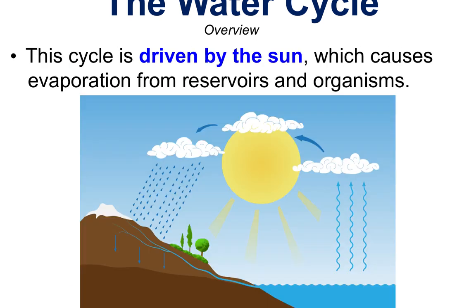What drives the water cycle on our planet is the sun. The sun causes evaporation. When we have reservoirs or places with lots of open water, and the sun comes out and the planet heats up, those water molecules increase in energy. They vibrate and eventually move out of their liquid state into a gas state, and that starts the process of condensation and then precipitation, beginning the water cycle.